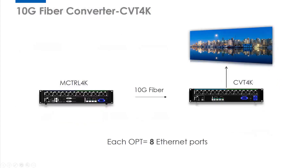As you can see, this is a fiber solution structure with the CVT4K. The CVT4K has 16 Ethernet ports, while CVT310 and CVT320 just have one. Since CVT4K uses 10G fiber, each OPT port handles 8 Ethernet ports. Now let's get more details about CVT4K.